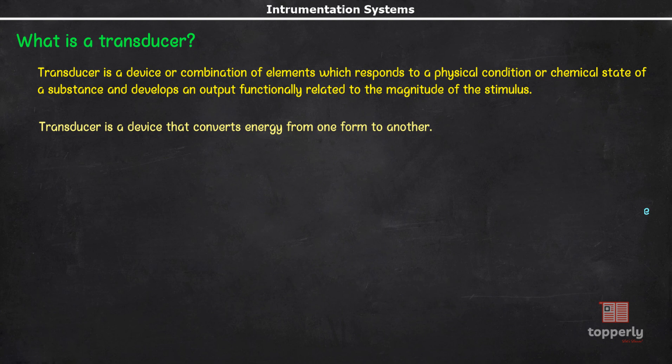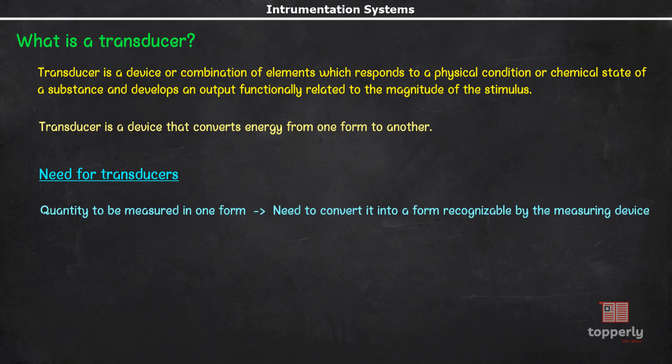Usually, it converts a signal in one form of energy to a signal in another. For example, optical energy to electrical energy or electrical signal to pressure variation, etc. This definition of transducers also reminds us the need for transducers. Suppose our quantity to be measured is in one form and we need to convert it into some other form of energy for the purpose of measurement, then we can use transducers.